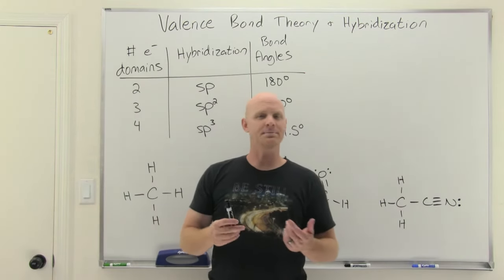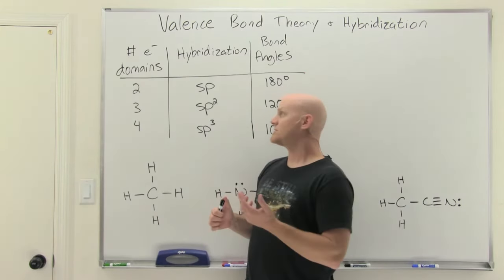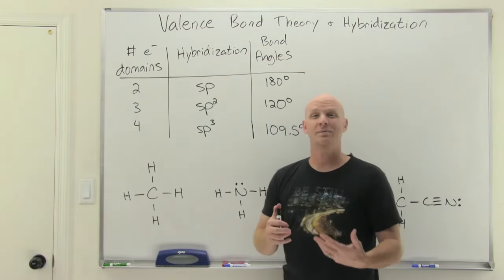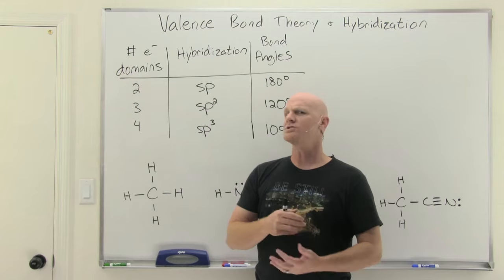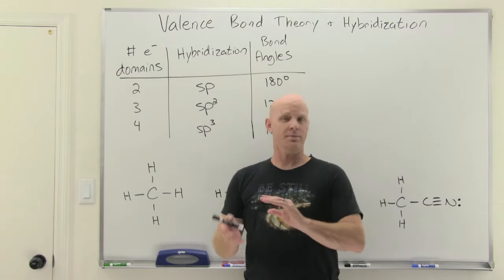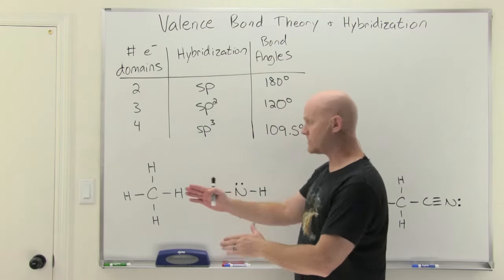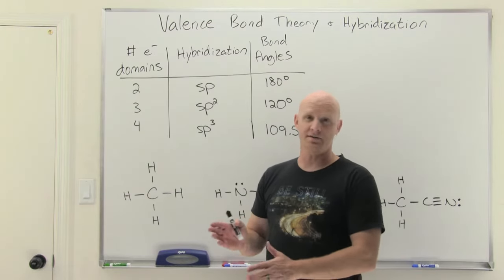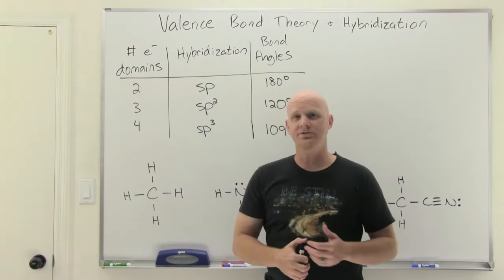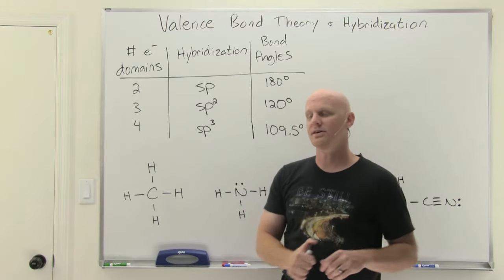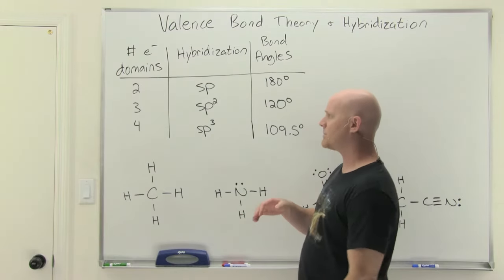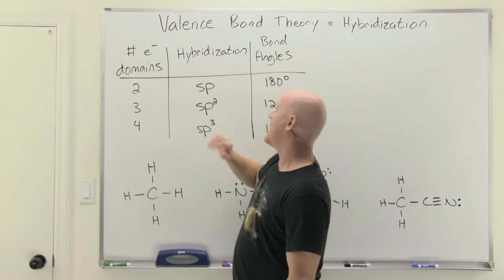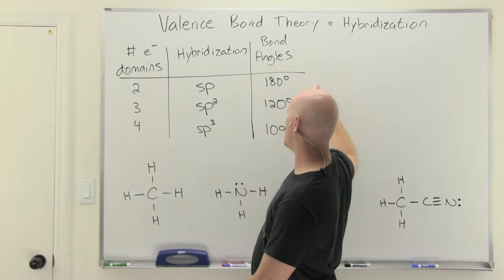Now let's take a closer look at hybridization. First, I want to point out that you can just look at a Lewis structure and determine an atom's hybridization without even deeply understanding what hybridization is. You have to be able to quickly determine hybridization. It turns out there's a simple relationship between the number of electron domains around an atom and its corresponding hybridization, as well as its bond angles — which we related back to VSEPR theory in general chemistry.